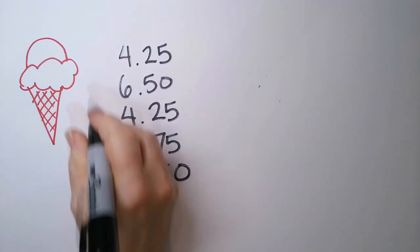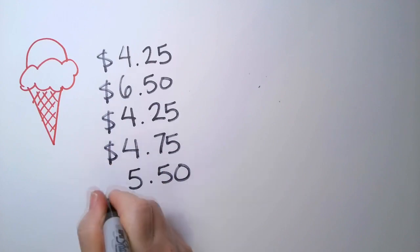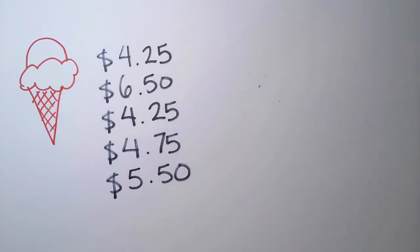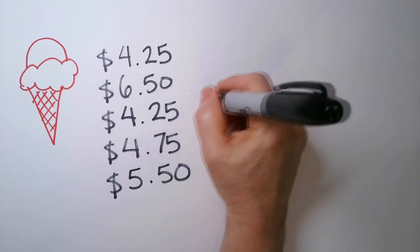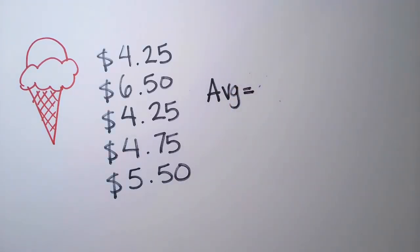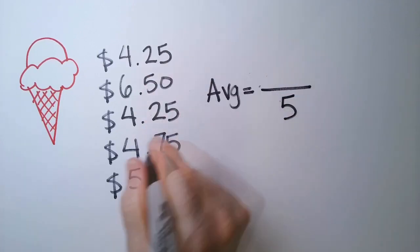Let's say you run an ice cream store, and this is how much each customer spent for the last five times that you rang them up at the cash register. So using that, let's find out how much does the average person spend on ice cream in your store. So I have five different numbers here.